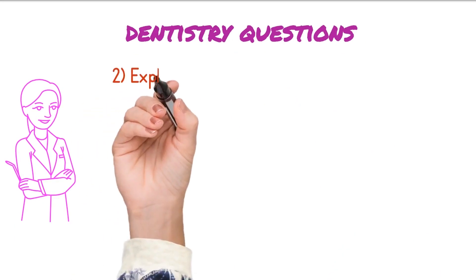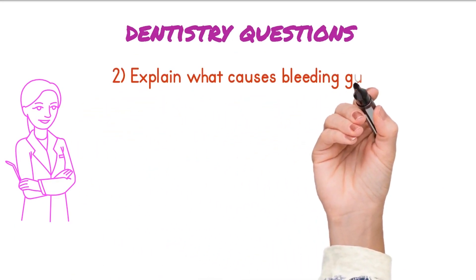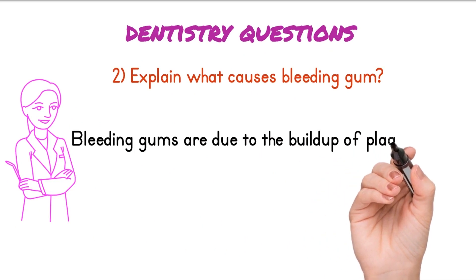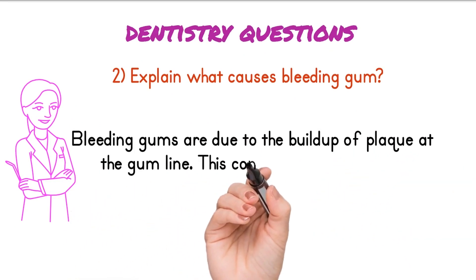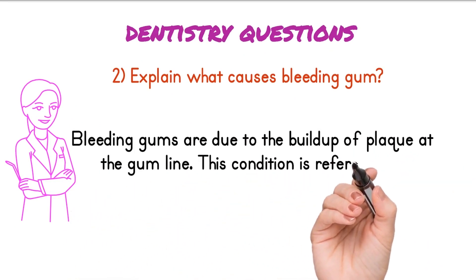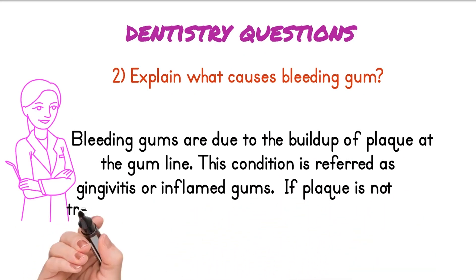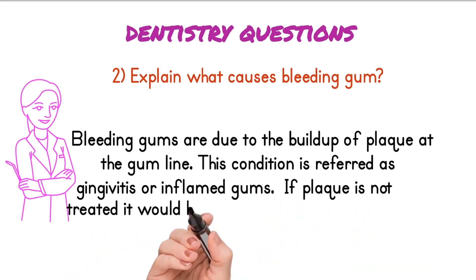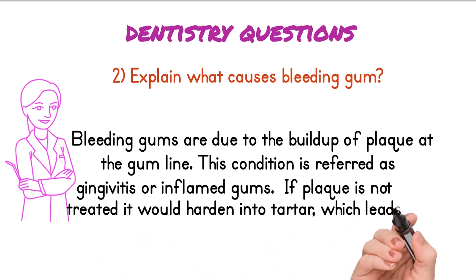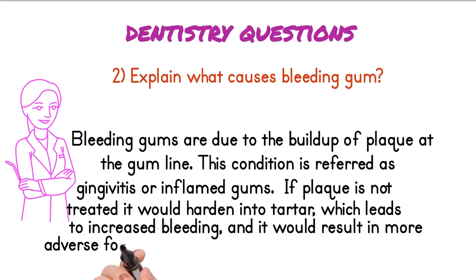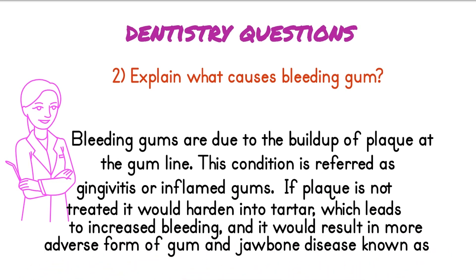Explain, what causes bleeding gums? Bleeding gums are due to the buildup of plaque at the gum line. This condition is referred to as gingivitis or inflamed gums. If plaque is not treated, it hardens into tartar, which leads to increased bleeding and results in a more adverse form of gum and jawbone disease known as periodontitis.